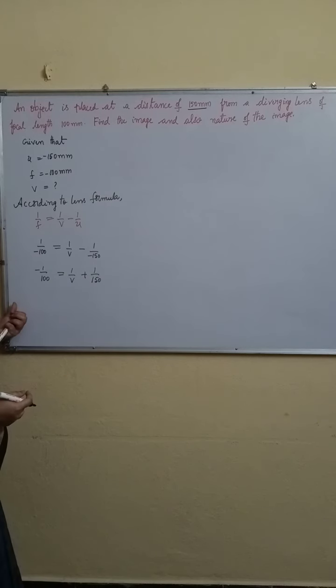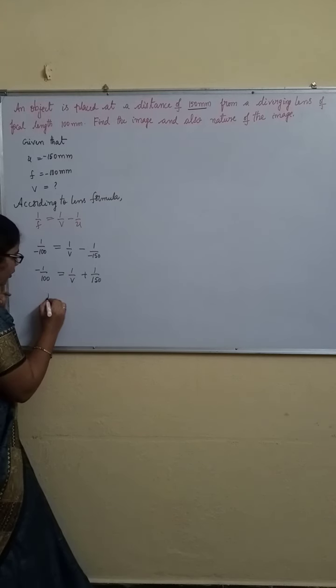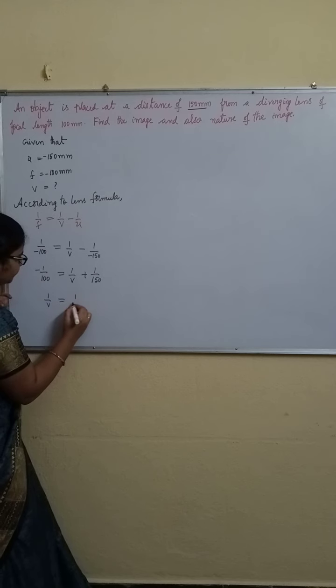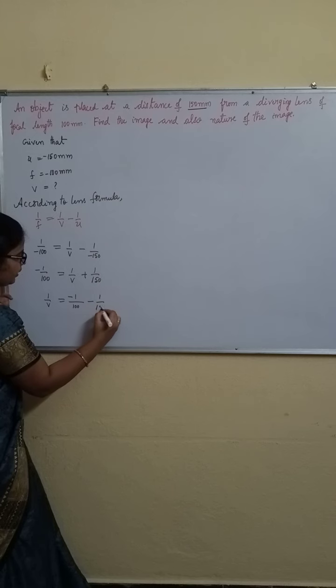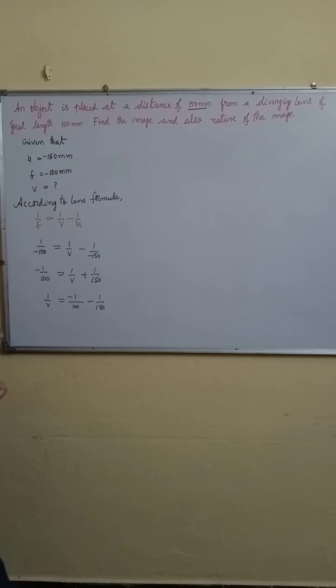Now when it comes from here, it will become positive. So 1 by V is equal to minus 1 by 100 minus 1 by 150. Okay?